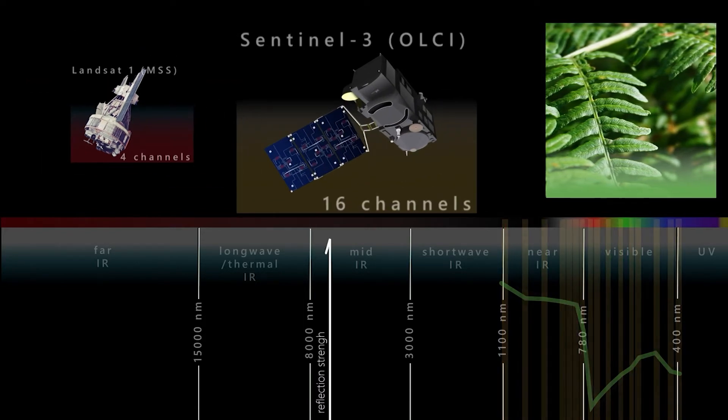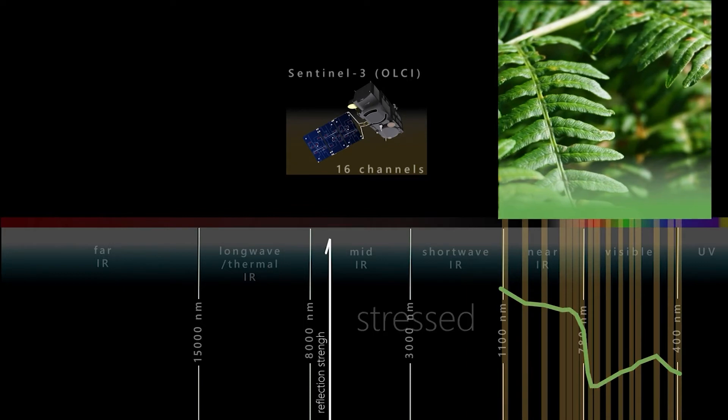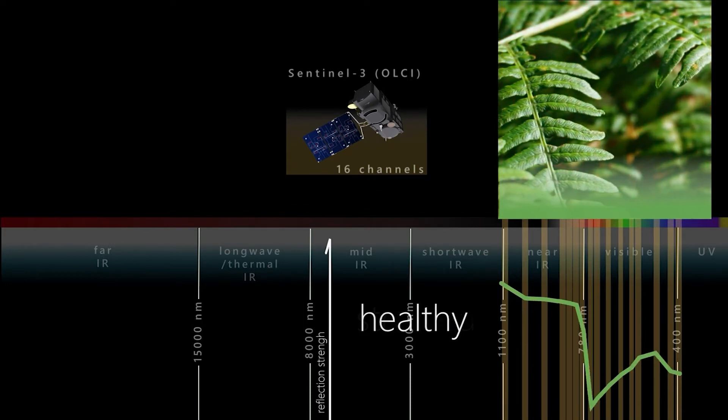By using the spectral signatures, we can differentiate between healthy and stressed vegetation, as they have different absorption behavior.